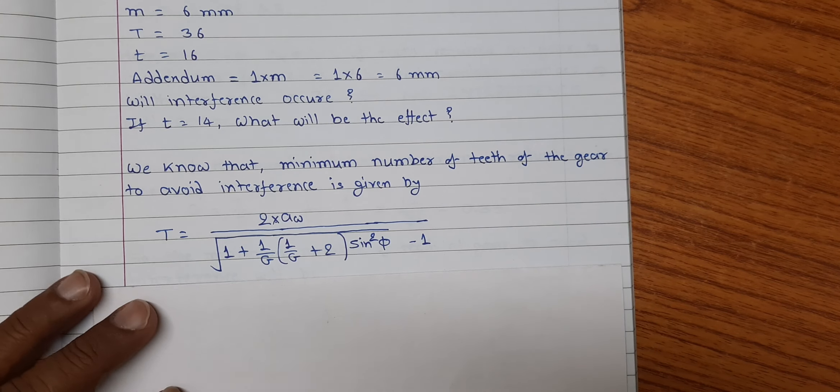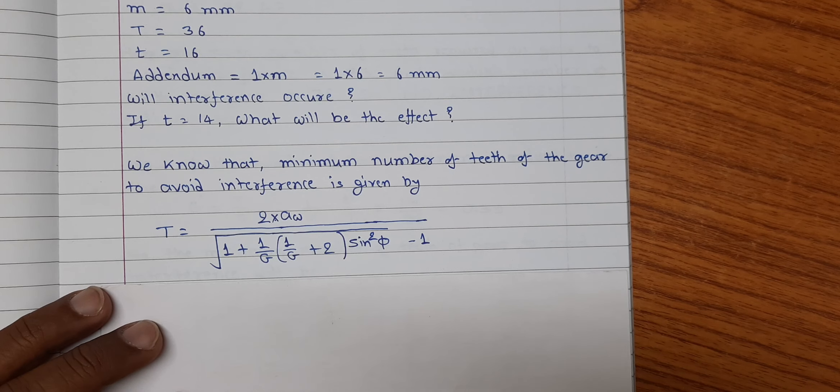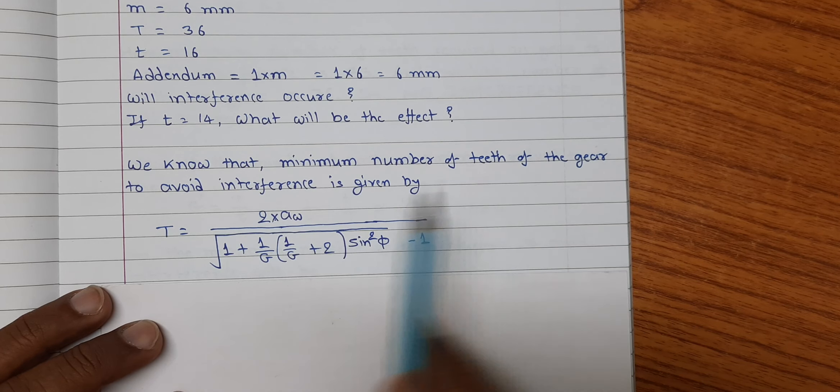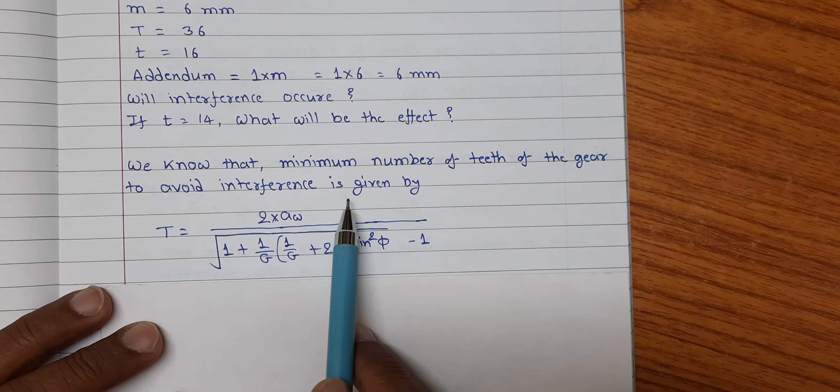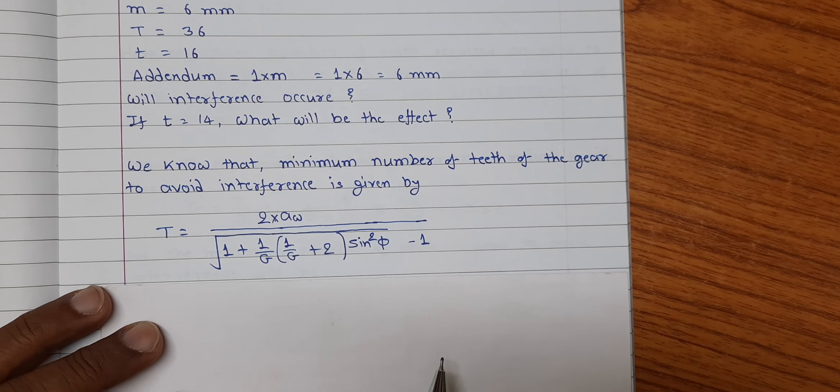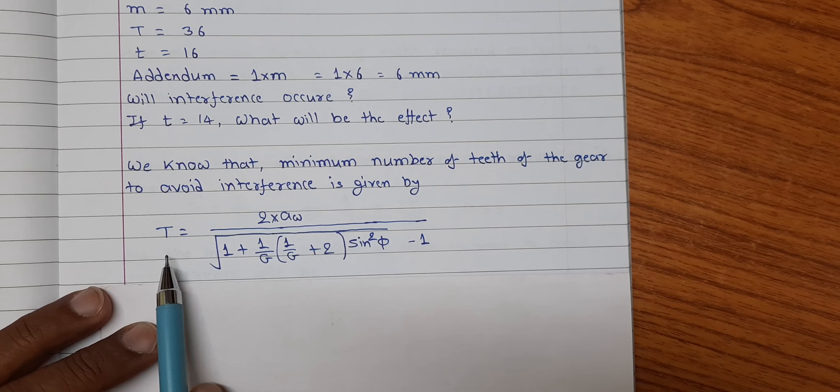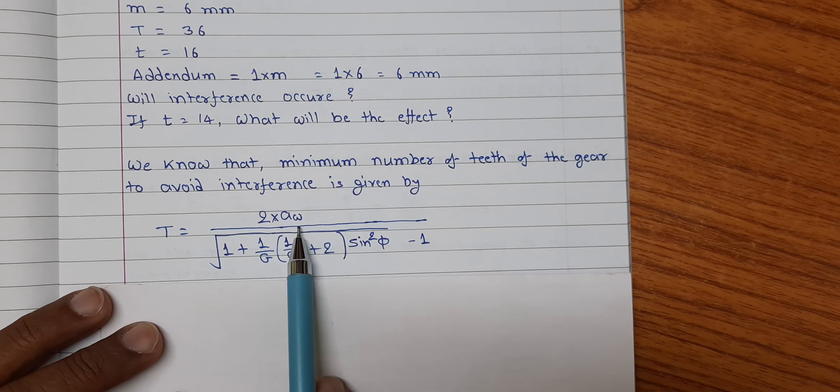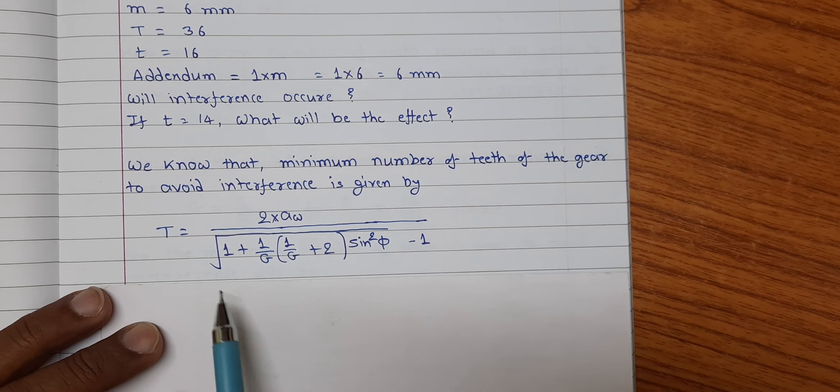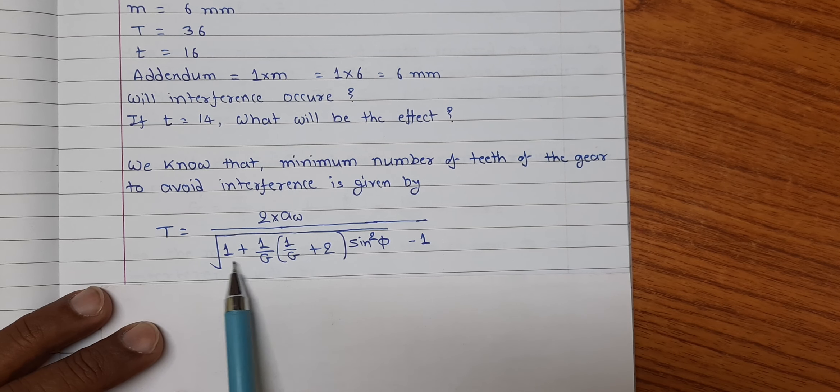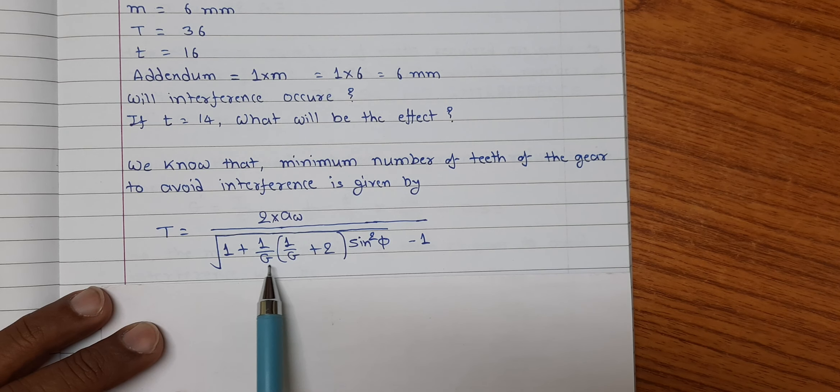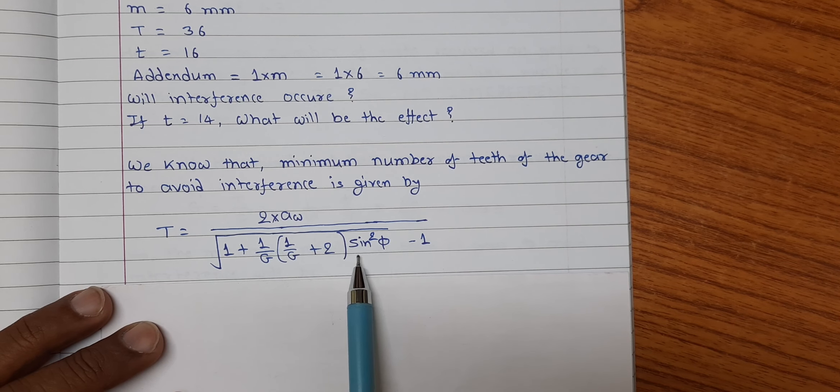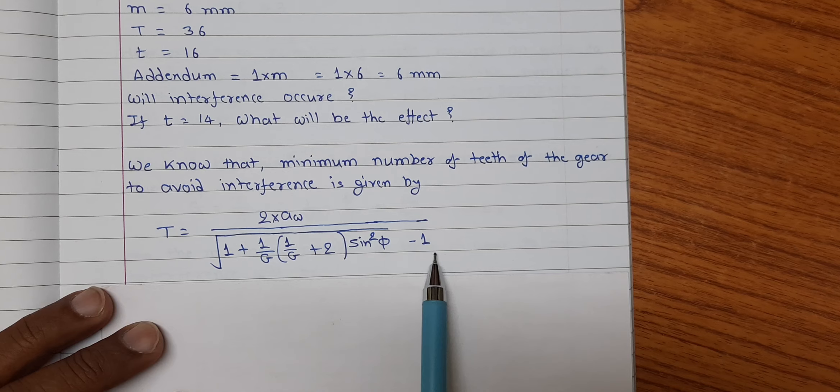Friends, we know that the minimum number of teeth of the gear to avoid interference is given by t equal to 2 into a omega divided by under root 1 plus 1 upon g into 1 upon g plus 2 into sin square phi minus 1.